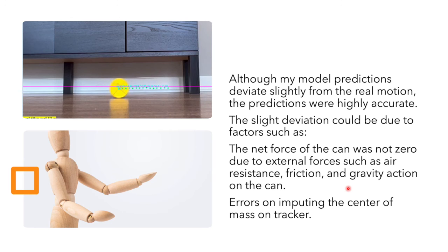As a conclusion of this experiment, I can say that although my model's predictions deviate slightly from the real motion, the predictions were highly accurate. The slight deviation could be due to factors such as the net force of the can not being zero due to external forces such as air resistance, friction, and gravity acting on the can.